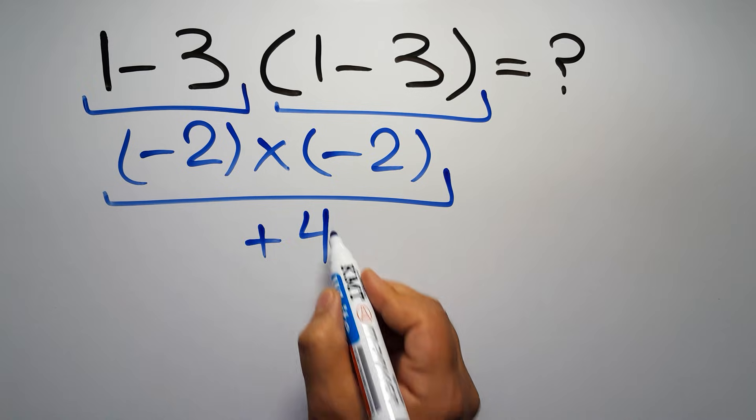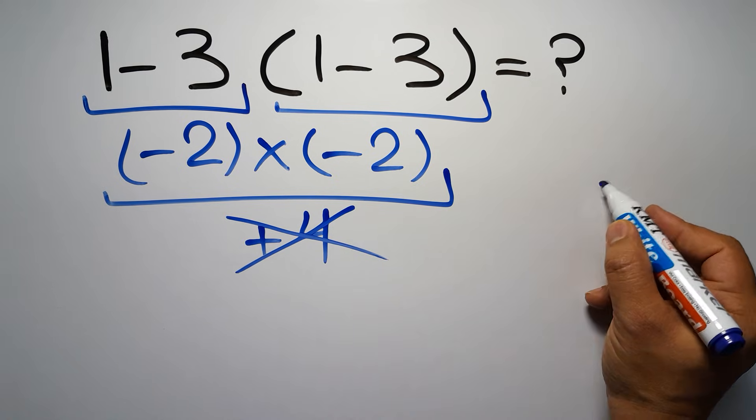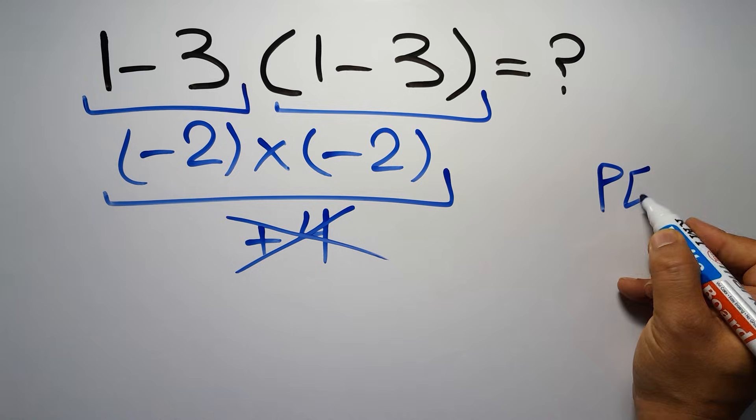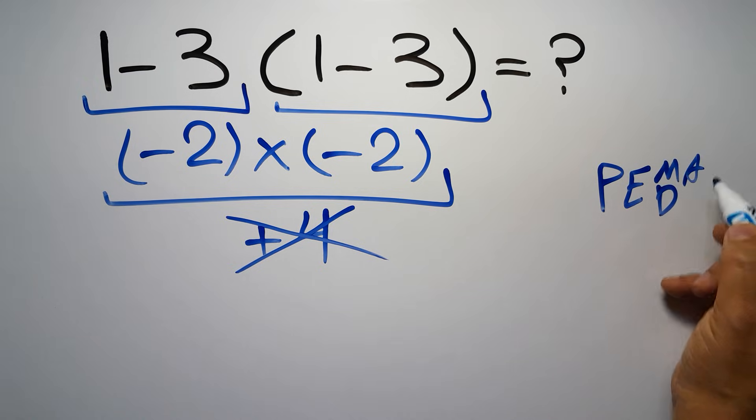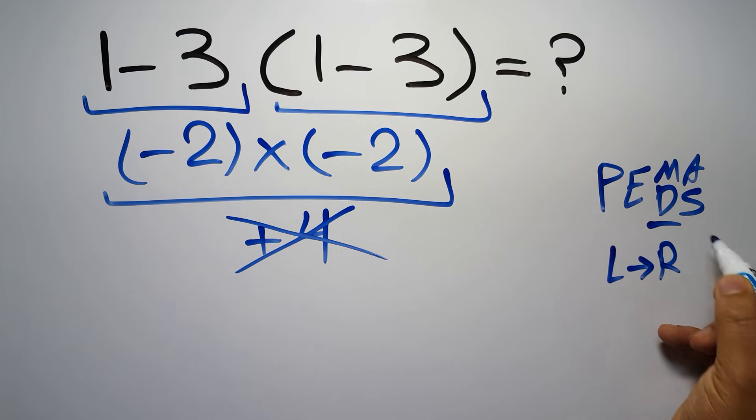But this answer is not correct because according to the order of operations, first we have to do parentheses, then exponents, then multiplication or division, and finally addition or subtraction. Remember that multiplication and division have equal priority and we have to work from left to right, and the same applies to addition and subtraction.